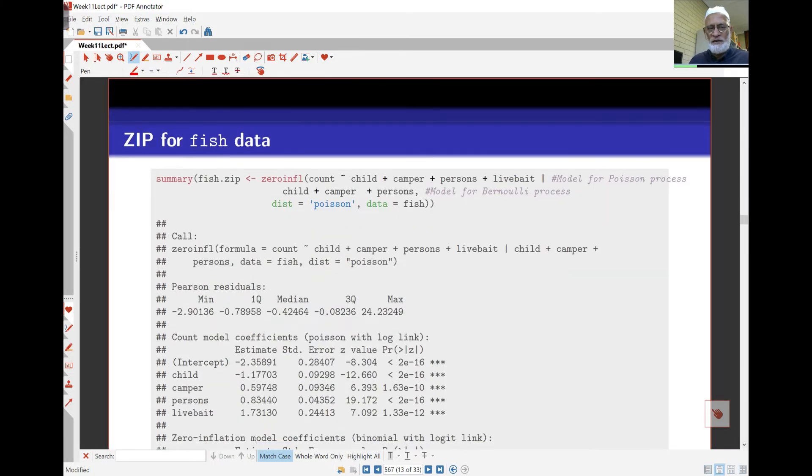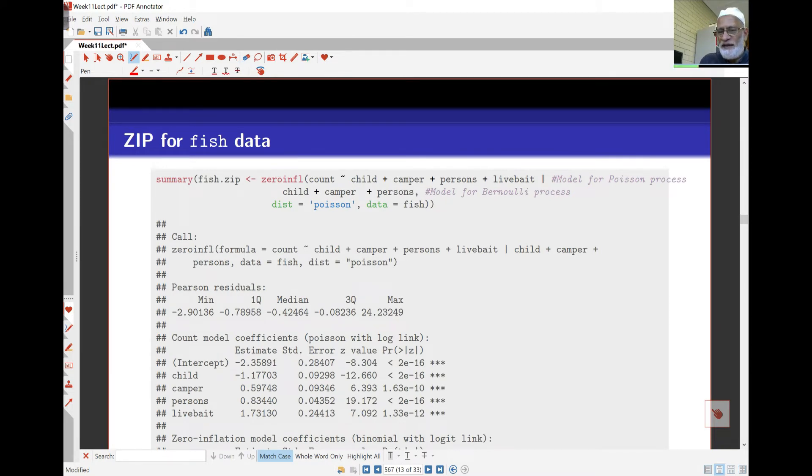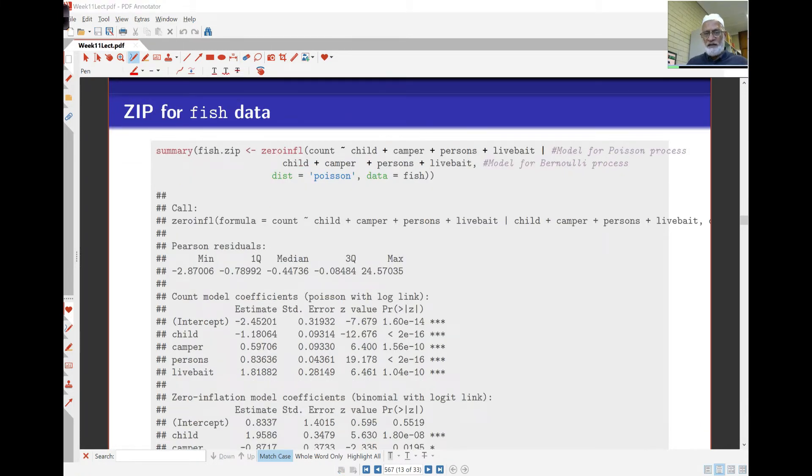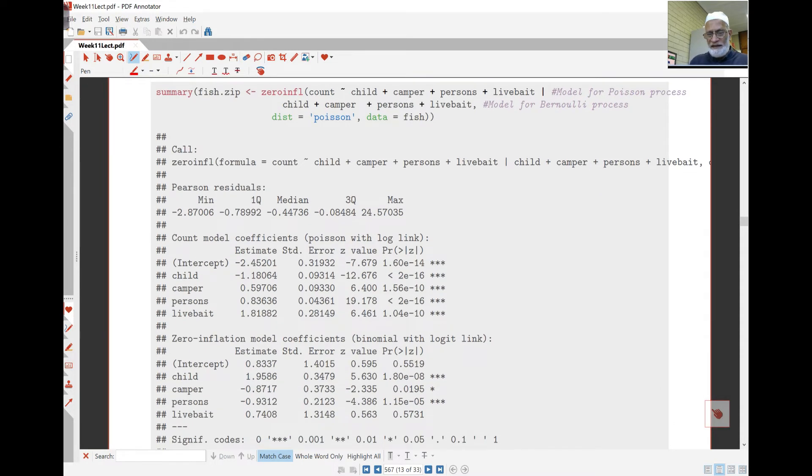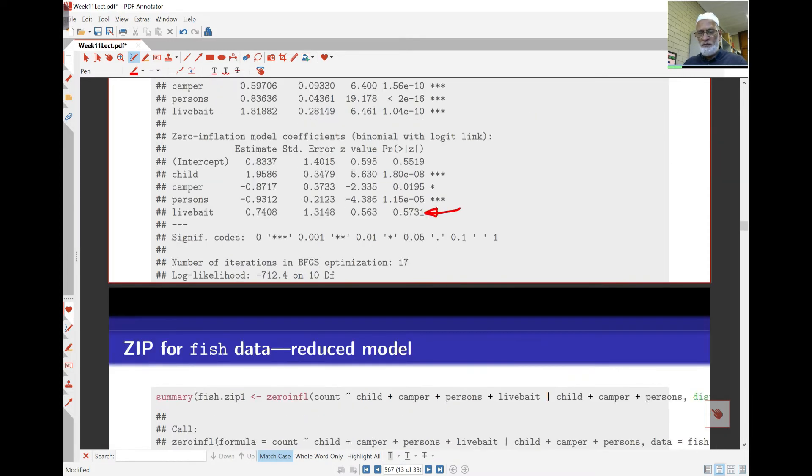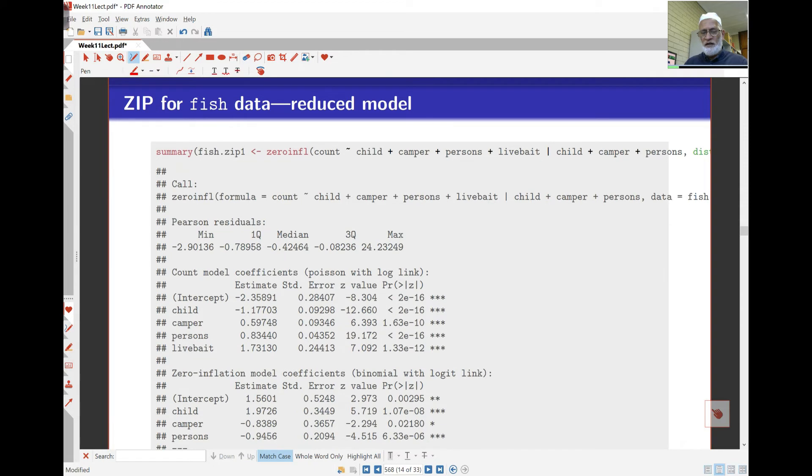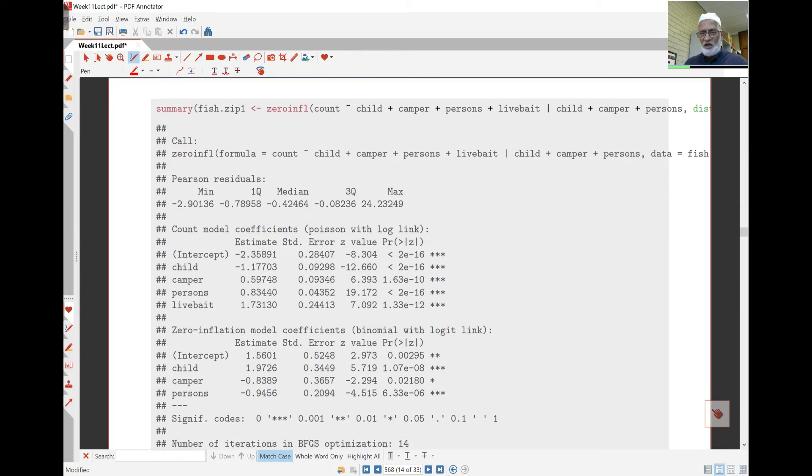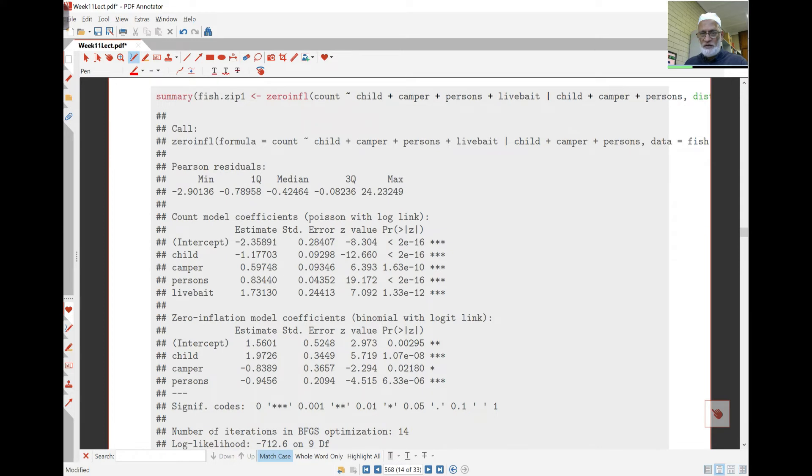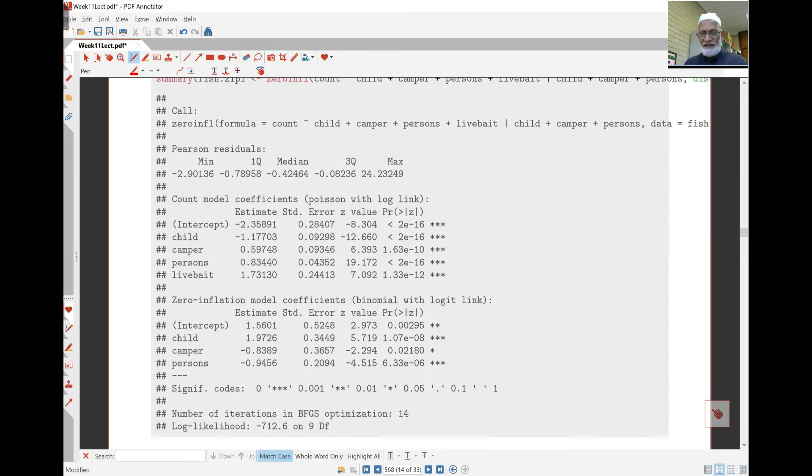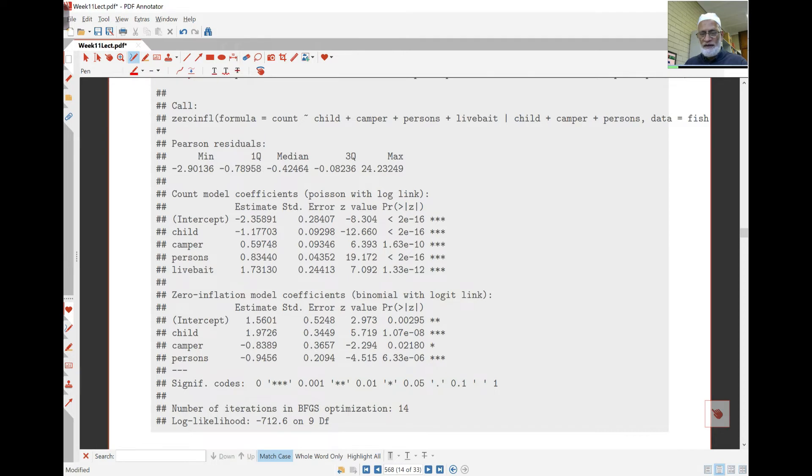So now you can see the model here in the binomial part of the model. Live bait is not significant. So we can omit that. And so we'll refit the model. Here it is. So here now we have in the Poisson part of the model, all the variables are significant. In the binomial part of the model, we've got three of the variables significant and live bait was omitted.